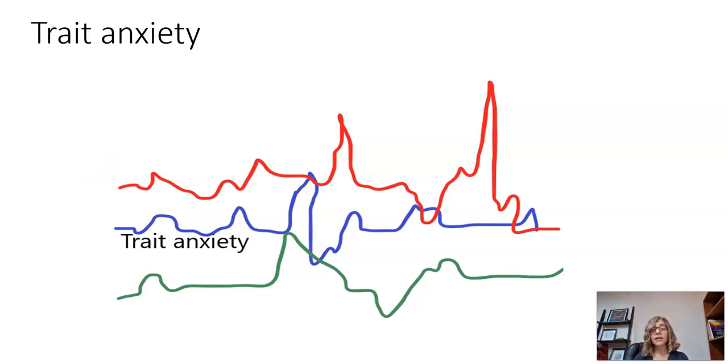Now, the thing about trait anxiety is that everybody has their own normal. So you have your set point, you know, when nothing is going on or nothing specific, you have your set point. And that might be high.